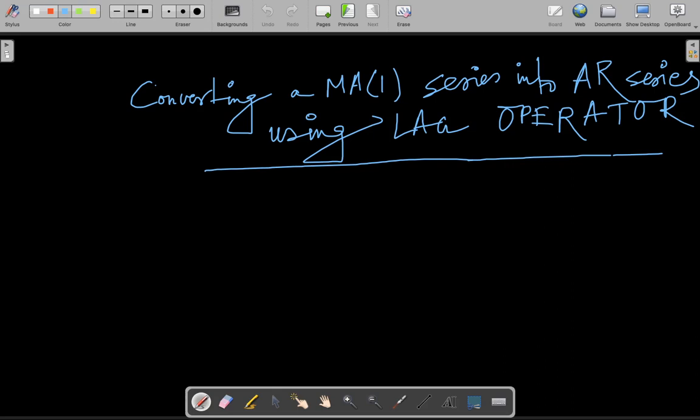Hello and welcome back to the lecture on time series econometrics. In this lecture, we are going to see how we can convert a MA(1) series into an AR series. Previously, we have seen the lag operator and used it to convert an AR series into an MA series. We used an AR(1) series and saw that we can convert it into an MA series of order infinity. Now in this lecture, we are actually going to see the reverse process: how we can convert an MA series into an AR series.